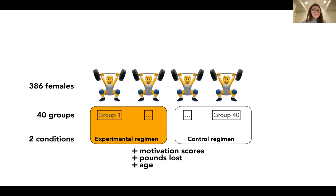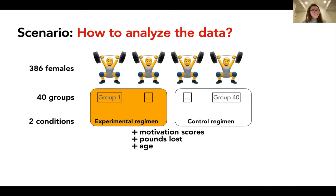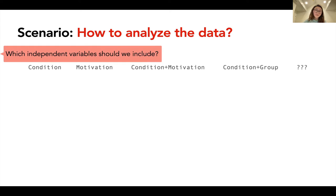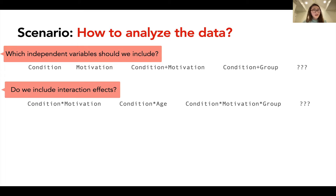Once they've collected this data, how should they go about analyzing it? When thinking about their data analysis, the researchers might ask themselves a series of questions, such as: which independent variables should we include — condition, motivation, both, maybe something else? Should they include interaction effects? Are interaction effects important to their research question? Are they conceptually founded in their domain knowledge?